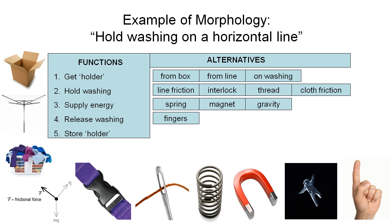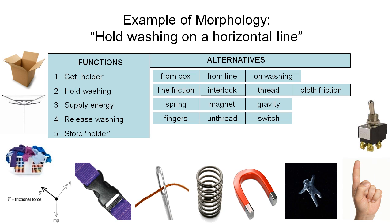If we go down to releasing the washing, what are the options? Maybe we could use our fingers to release it. Maybe we could unthread the washing, particularly if we're going to thread it — so those two would be linked and interrelated and might not work with the other alternatives on that list. Perhaps we could use a switch. Not sure at this stage what the switch is going to act on — that's something we can think about later.